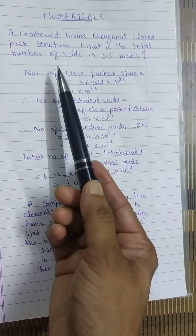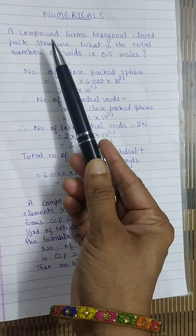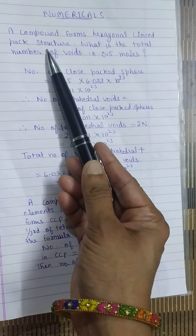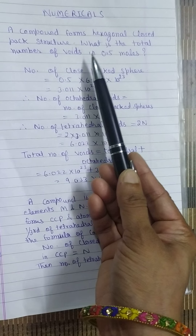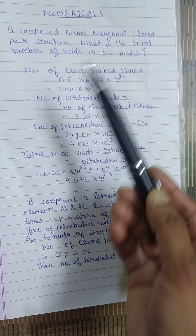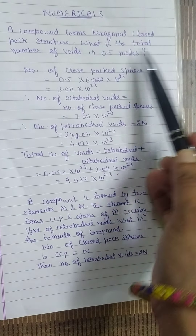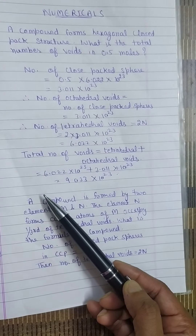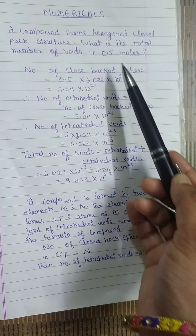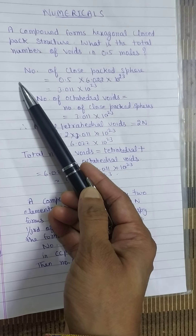A compound forms hexagonal closed pack structure. What is the total number of voids in 0.5 moles? This is the condition given and we have to calculate the total number of voids existing in 0.5 moles of hexagonal closed pack structure.